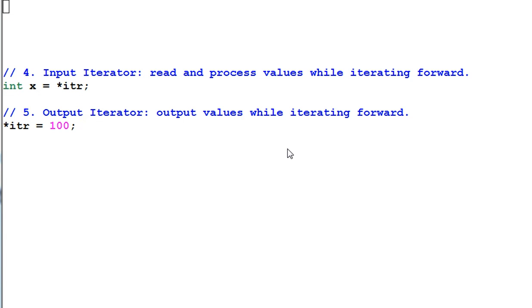Number four, input iterator. Input iterator is to read and process values while iterating forward. You can read from a dereferenced input iterator, but you cannot write to it. Output iterator is to output values while iterating forward. You can write into a dereferenced output iterator, but you cannot read from it. Both input iterator and output iterator can only move forward. It cannot move backward. So it provides a subset of the functionality of a forward iterator.